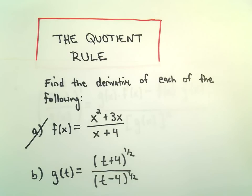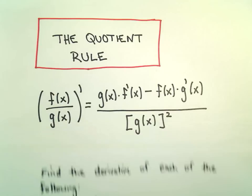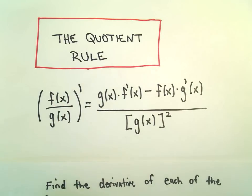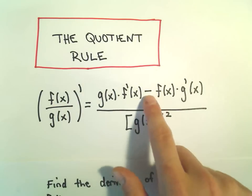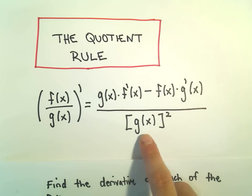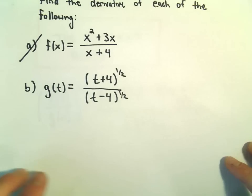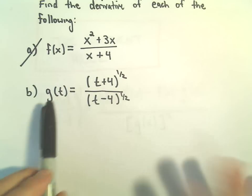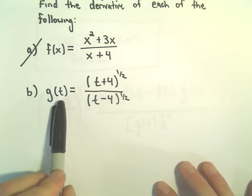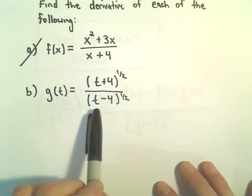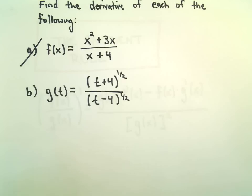Okay, so here we're going to do another example involving the quotient rule. The quotient rule says f over g prime is g times f prime minus f times g prime all over g squared. We're just going to use that formula to find the derivative. In this case we're using t, so g of t is t plus 4 to the 1 half over t minus 4 to the 1 half.